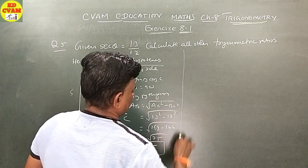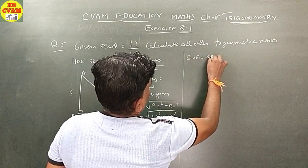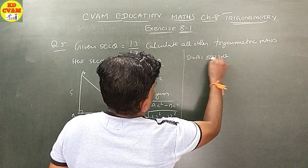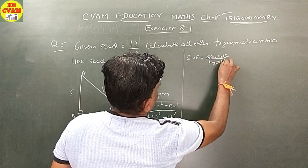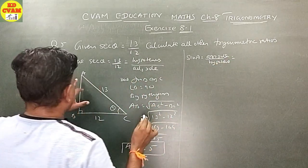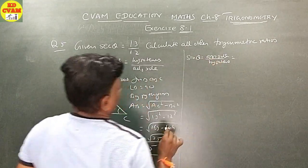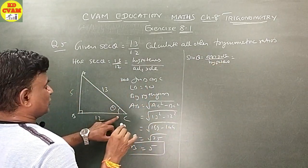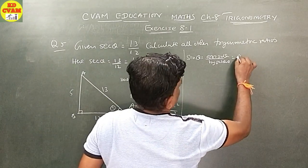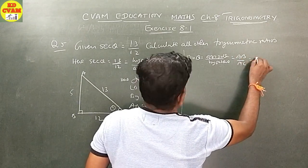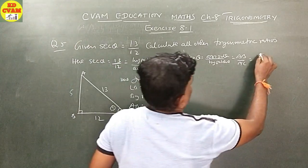Sin theta is equal to opposite side upon hypotenuse, which equals AB upon AC. That is, 5 upon 13.